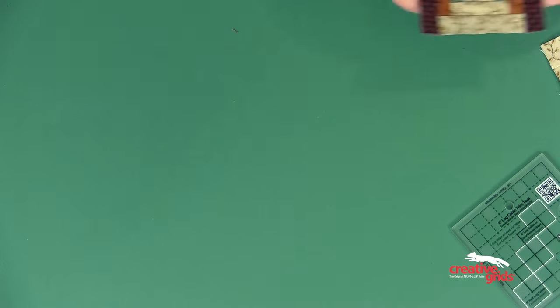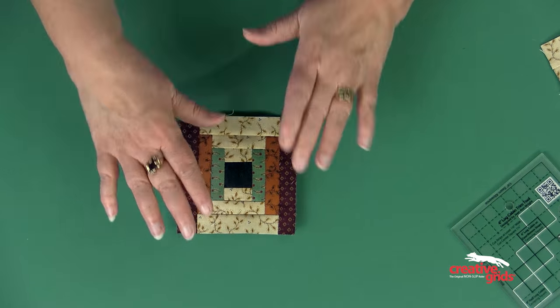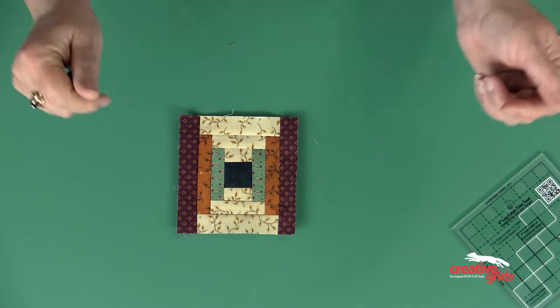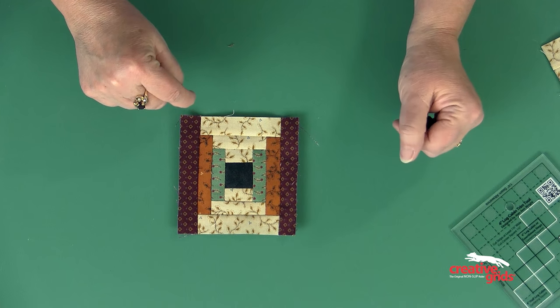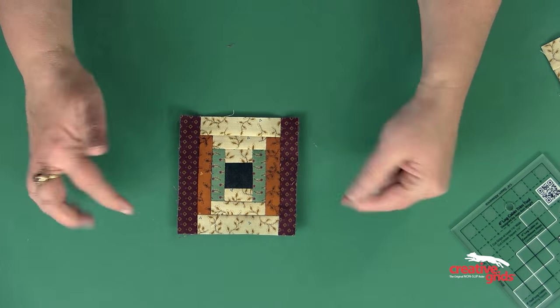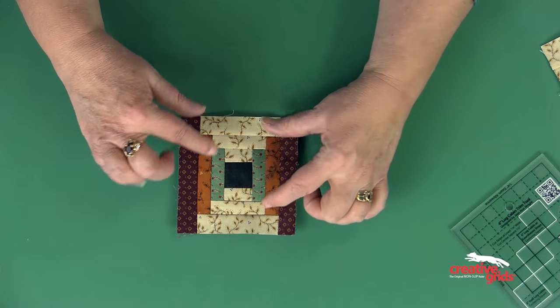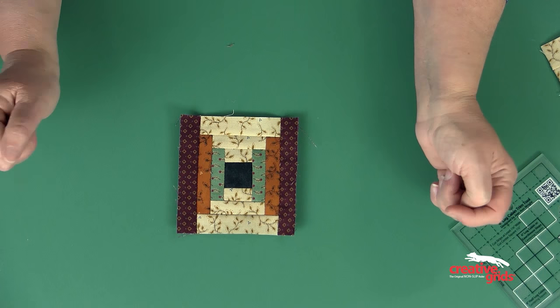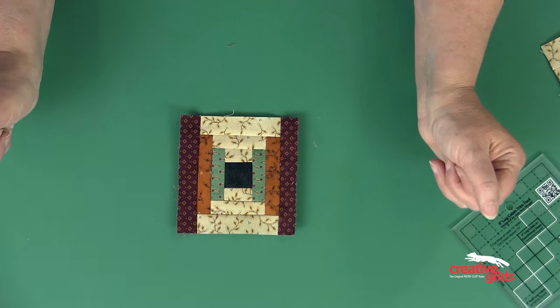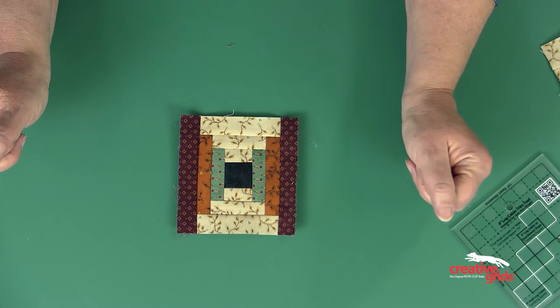That is the log cabin. I can also do a courthouse steps with the same tool. The trimming is exactly the same, but I sew the fabrics on by doing opposite sides of lights and opposite sides of darks. And I would trim this round, then add two more lights, two more darks, trim again, two more lights and two more darks, and trim just like I did the log cabin trim tool.